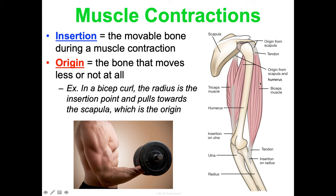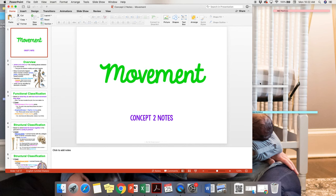The concept of origin and insertion will continue to come up as we look at different joints and go deeper into muscle contraction in Concept Three. That concludes our overview of movement.